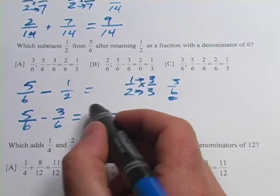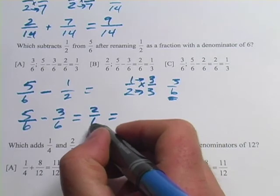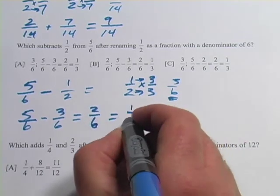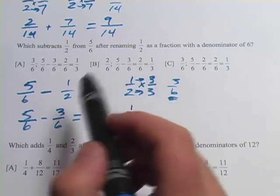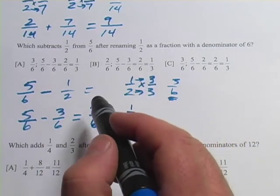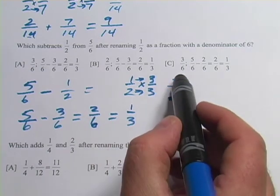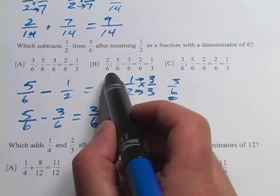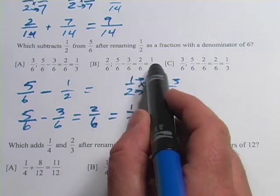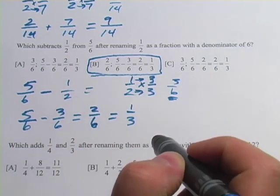Although, at this point, you probably want to reduce the fraction. If you take a 2 out of the top and the bottom, you would get 1/3. And let's see if we can find something here. This one has, this one says 5/6 minus 3/6 equals 2/6 equals 1/3. That looks like our answer.